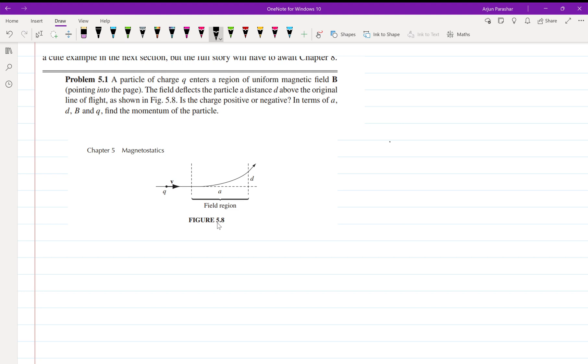Hello everyone, welcome back. Let us start problem number 5.1, which is a similar problem we have done in our last video which was cyclotron. The problem says a particle of charge q enters a region of uniform magnetic field B.